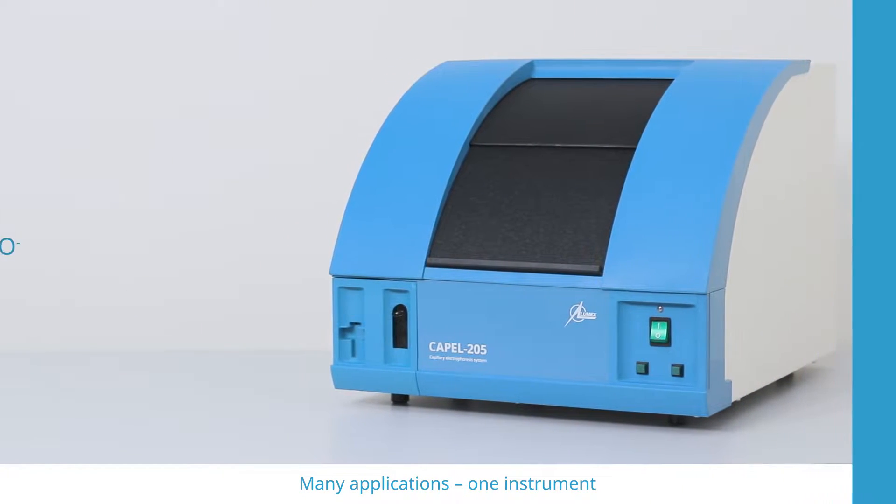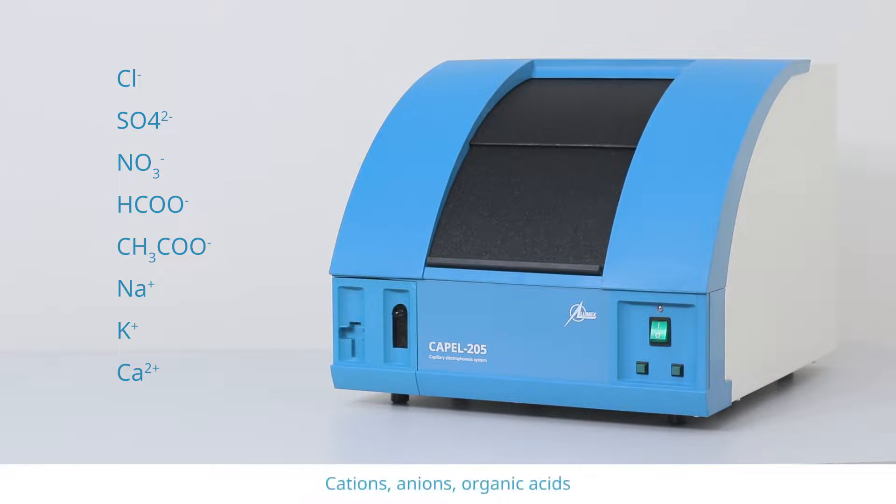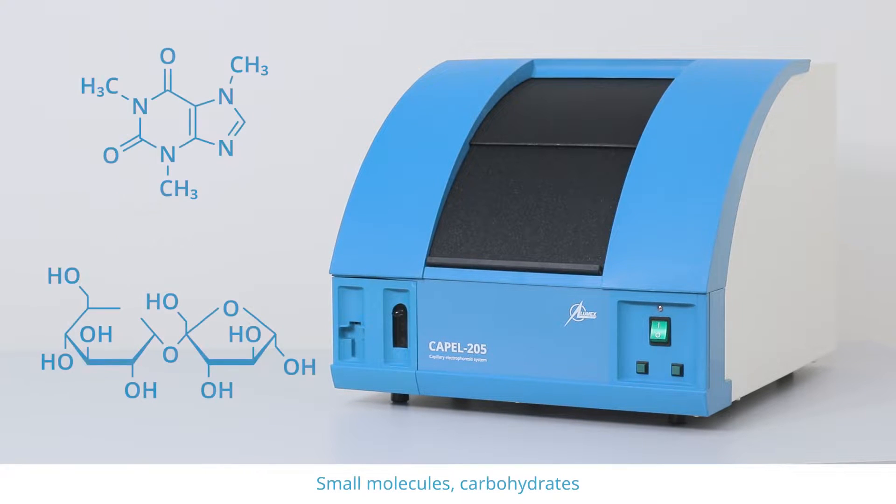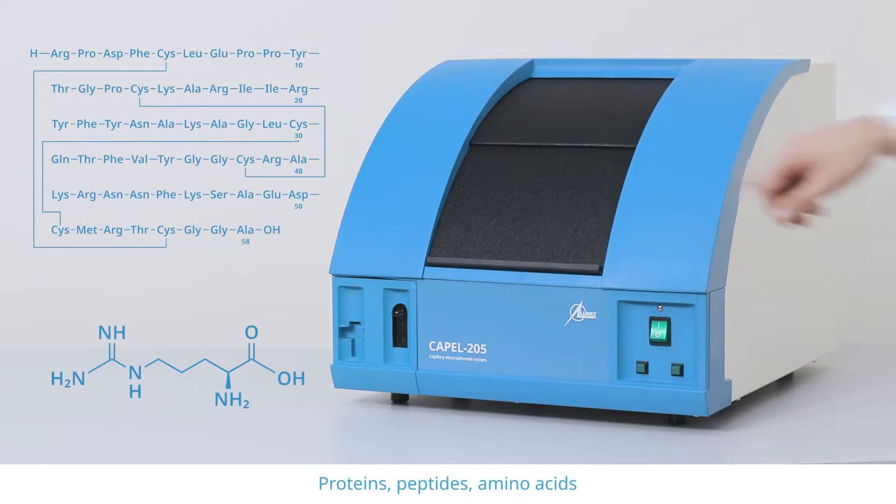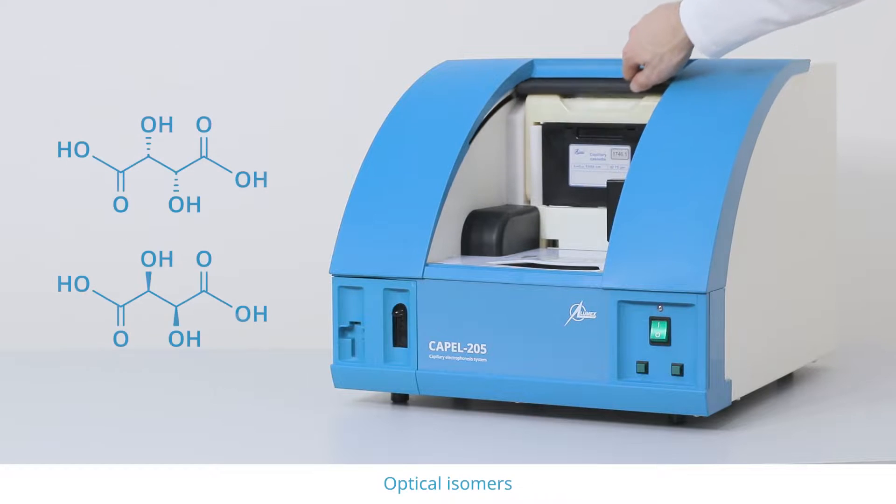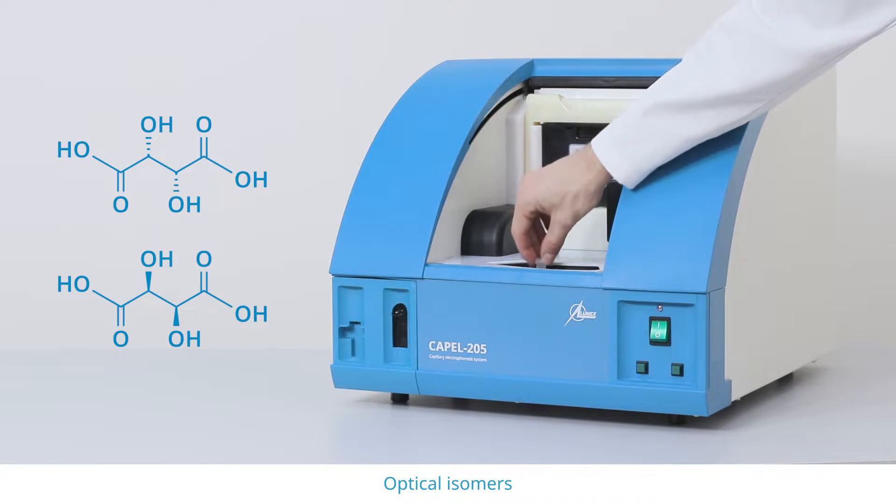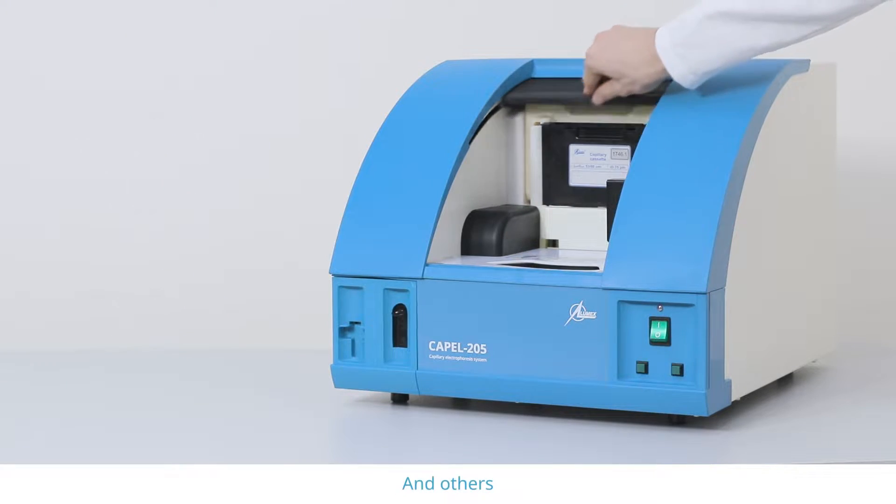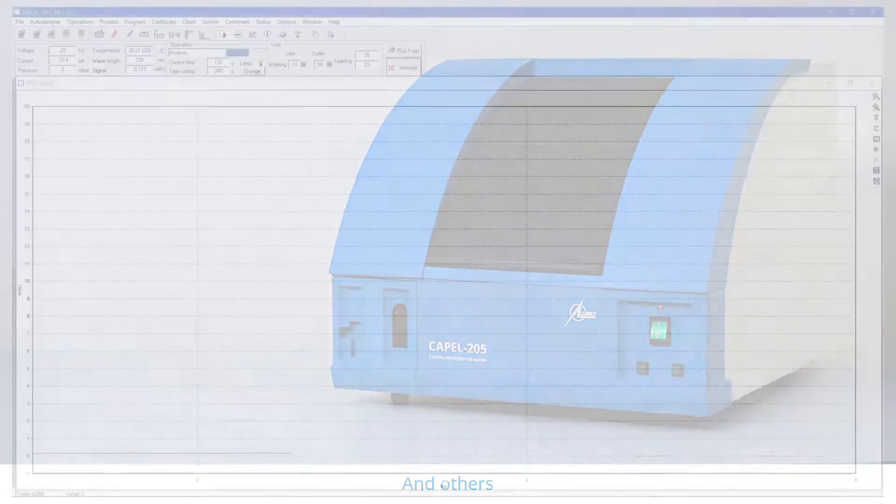CAPEL 205 can detect all classes of analytes: organic and inorganic, ionic and non-ionic, polymers and monomers, optical, cis, trans, and constitutional isomers, and others. All of this is done with one instrument.